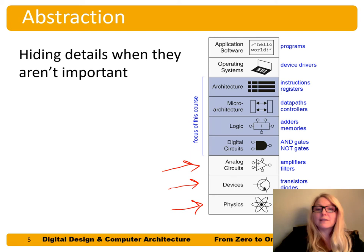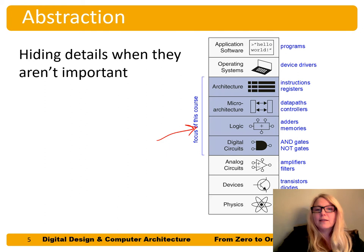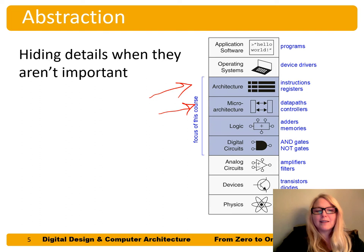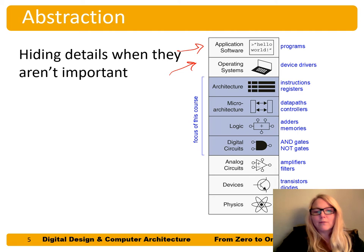From transistors and diodes we can build circuits — analog circuits and digital circuits — and gates like NOT gates, etc. From those gates we can build logic units such as adders and memories. Then we can put those units together to build a processor, what's called the microarchitecture, and above that is the architecture — how we access or program this processor using instructions and register designations.